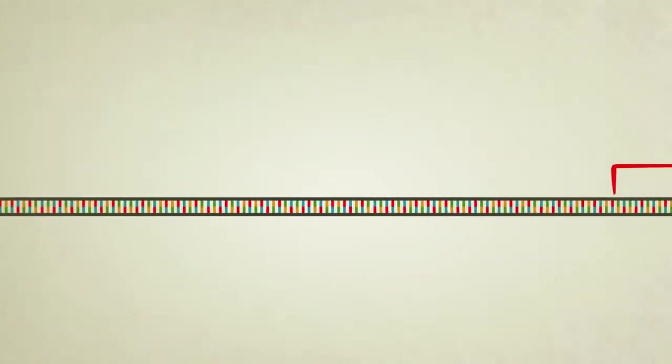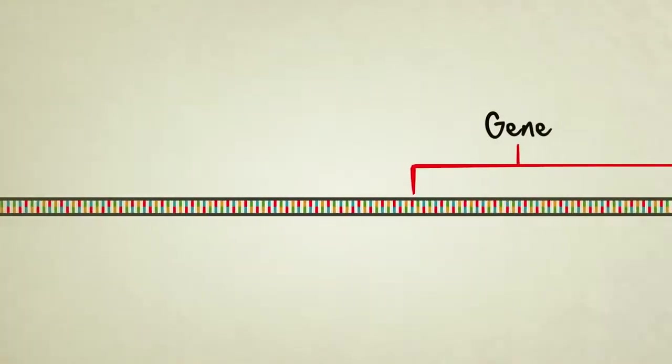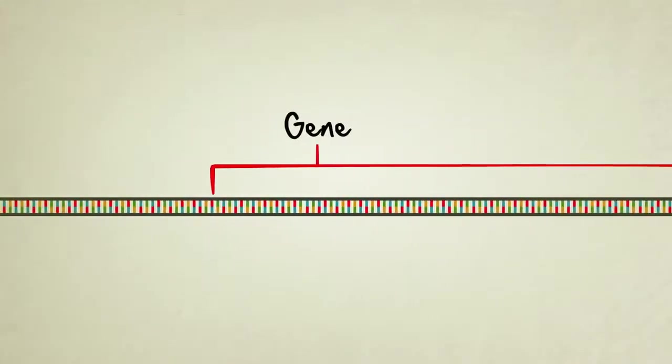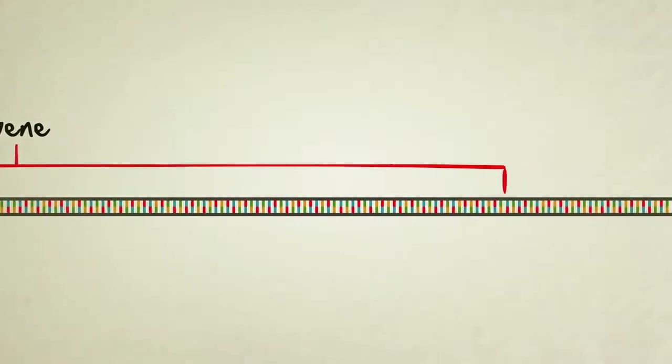A single strand of DNA contains thousands of genes, or unique protein recipes. Humans have roughly 20,000 altogether.